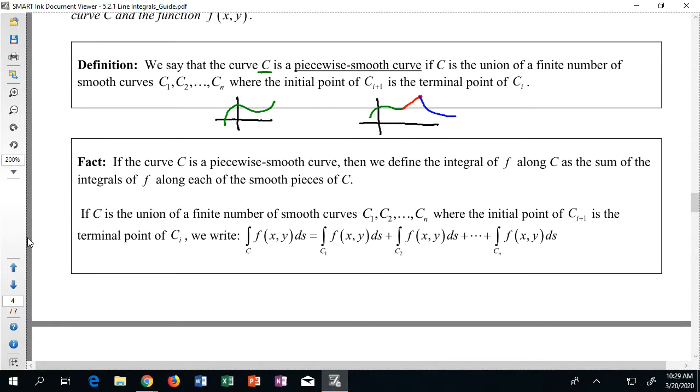Well here's an important fact then about curves like this. If C is a piecewise smooth curve then we define the integral of F along C as the sum of integrals along each of the smooth pieces. So essentially if C is a union of finite smooth curves, if I have like green piece, red piece, blue piece, then if I want to integrate across the whole thing,